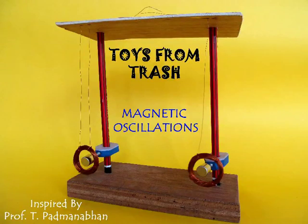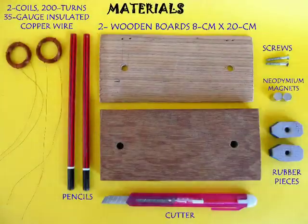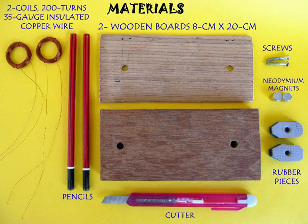To see the coils magnetically oscillate you would require two copper coils, strong magnets, wood, pencils, etc.